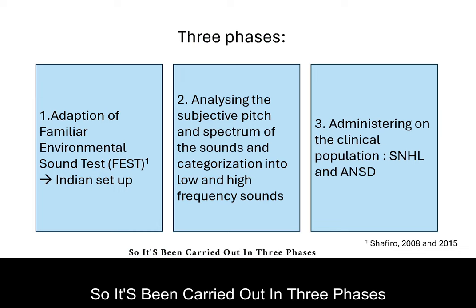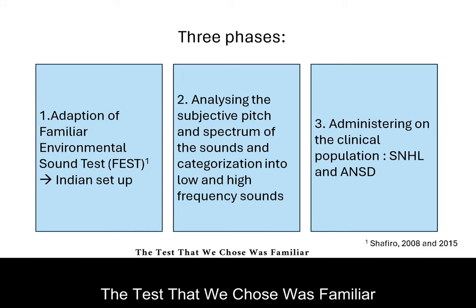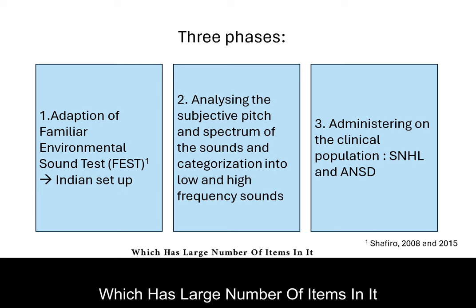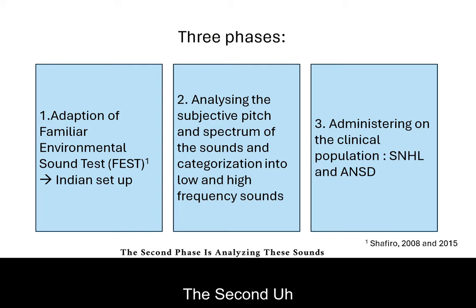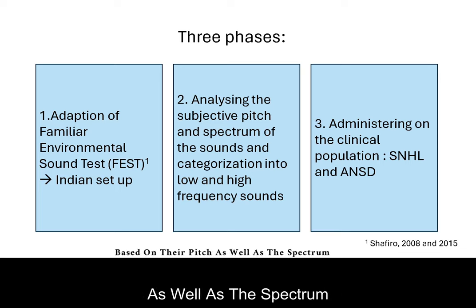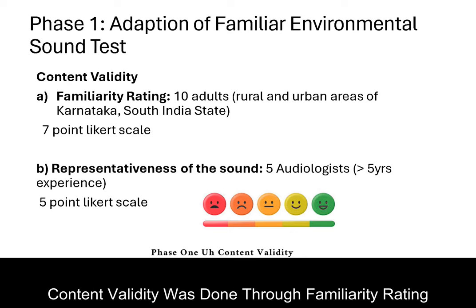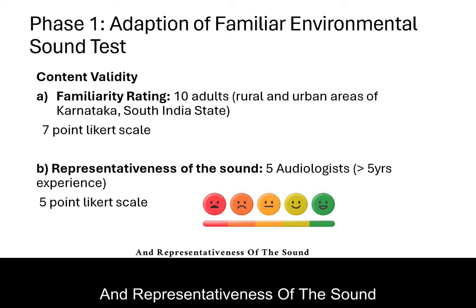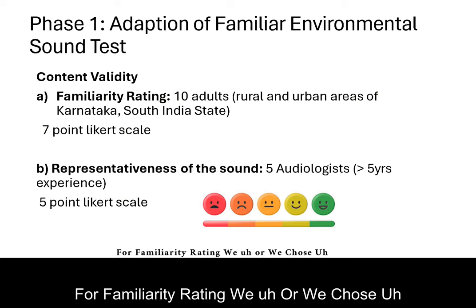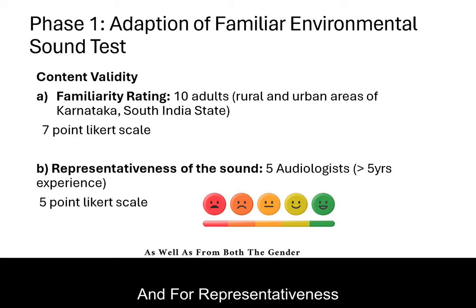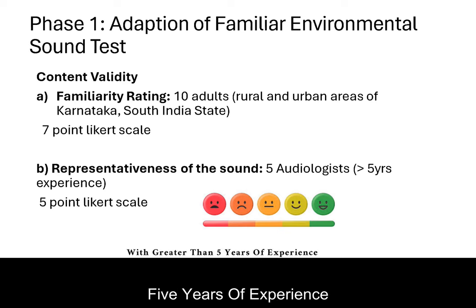The study was carried out in three phases. Phase 1 was adaptation of the test. The test chosen was the Familiar Environmental Sound Test by Shaphiro, which has a large number of items. Content validity was done through familiarity rating and representativeness of the sound. For familiarity rating, adults from both rural and urban areas and both genders were chosen. For representativeness, audiologists with greater than five years of experience were chosen.